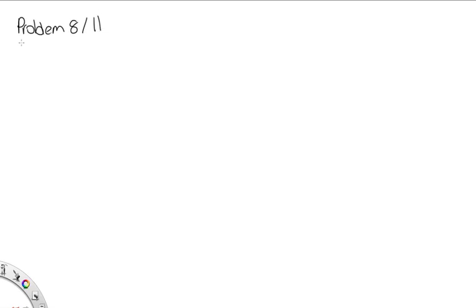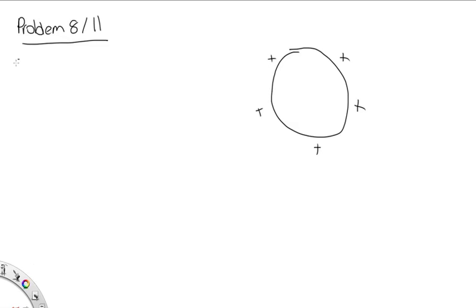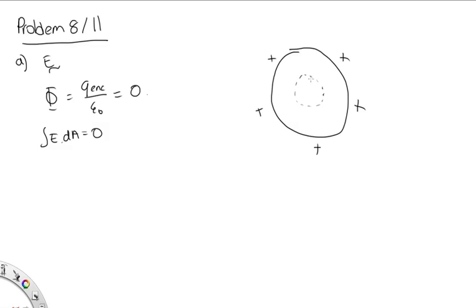Problem 8 for 1221, or 11 for 1231. We have a spherical balloon with charge spread uniformly over its surface. In part A, we're asked for the electric field inside the balloon. Drawing a surface inside the balloon, the flux equals enclosed charge over ε₀, and there is no enclosed charge, so this equals 0. The surface area is clearly not 0, so the electric field must be 0 inside the balloon.